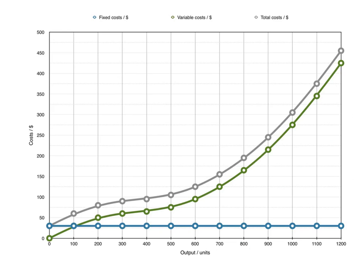Now we understand why the fixed cost curve is a horizontal line, but why do variable cost and total cost both increase at a decreasing rate first, and then increase at an increasing rate? This is because of the law of diminishing marginal returns. When total cost and variable cost are increasing at a decreasing rate, diminishing returns has not yet set in. Once diminishing returns sets in, marginal product and average product start to fall, and total cost and variable cost will start to increase at an increasing rate. Remember, they are always increasing — but when increasing at a decreasing rate, diminishing returns has not yet set in; once they both increase at an increasing rate, diminishing returns has set in.